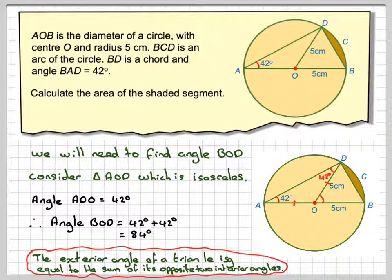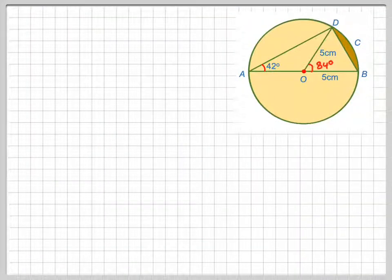Therefore, 42 plus 42 is equal to 84, so that angle will be equal to the sum of the two opposite interior angles. We now have that angle is 84, which allows us to calculate the area of the segment.